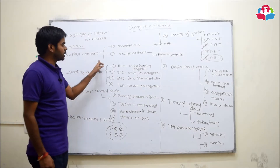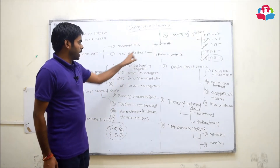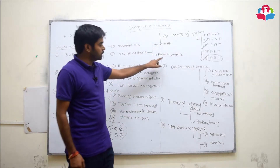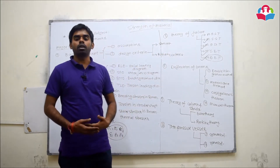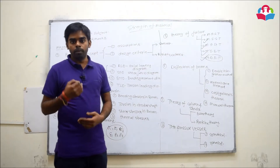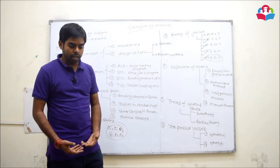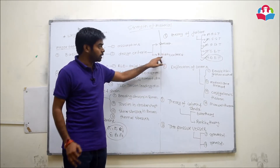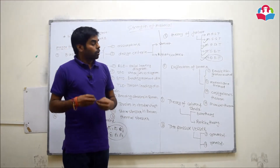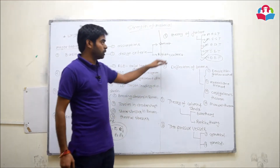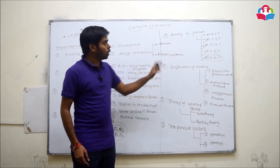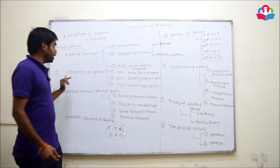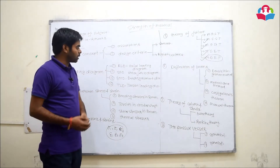The first topic is basic concepts. In basic concepts we are going to cover assumptions, and the strength and design criteria. In design criteria, the first is the strength criteria and the second is the rigidity criteria. In order to design a safe component or structure, both criteria are important. If a component satisfies one criteria but not the second, it is not fully safe and may fail because of the rigidity criteria. The second topic is the loading diagram, which has four types.